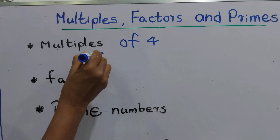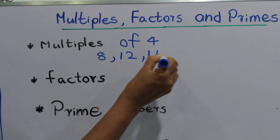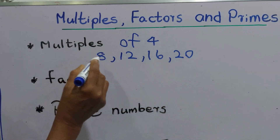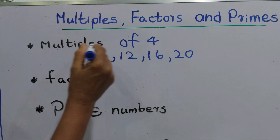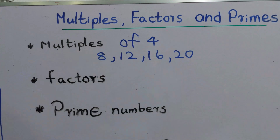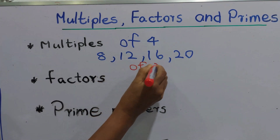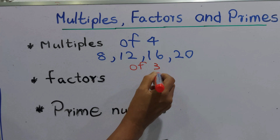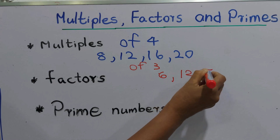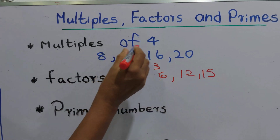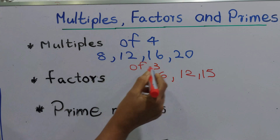Multiples of 4 are: 8, 12, 16, 20. For multiples of 3, we can write: 6, 12, and so on. These are the multiples of 3 and these are the multiples of 4. Now we will learn about factors.